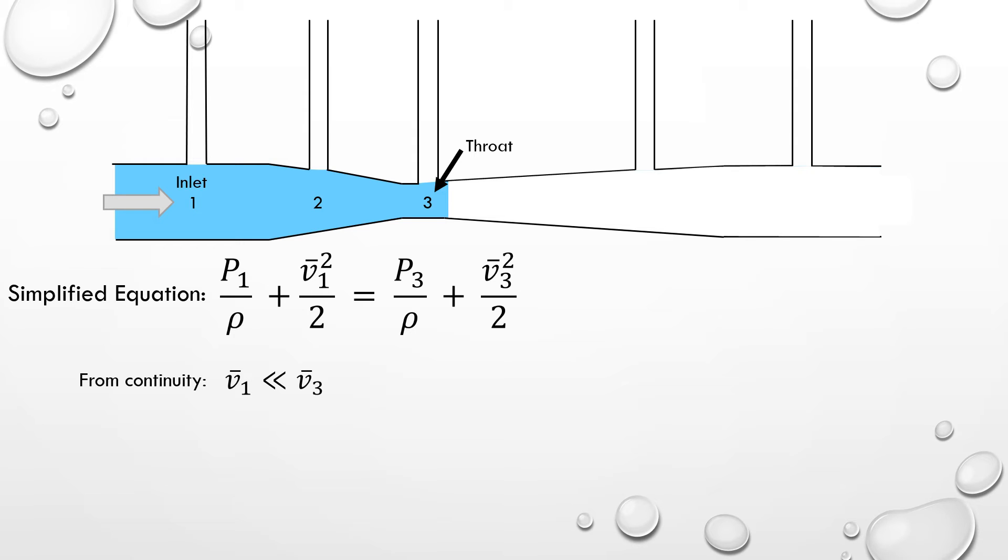If we rearrange the simplified energy balance, we can see that the pressure at the inlet must be much higher than the pressure at the throat. This is also confirmed by the manometer heights in the venturi.